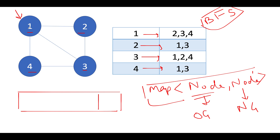Let's assume the first node given to us is 1. Since it's the first node, I'll simply add it into my queue as a default case. Along with it, I'll create a new node corresponding to 1 — let's call it 1'. So 1' has been created, and I'll put this information in my map, stating that corresponding to original node 1, we have a new node named 1'.